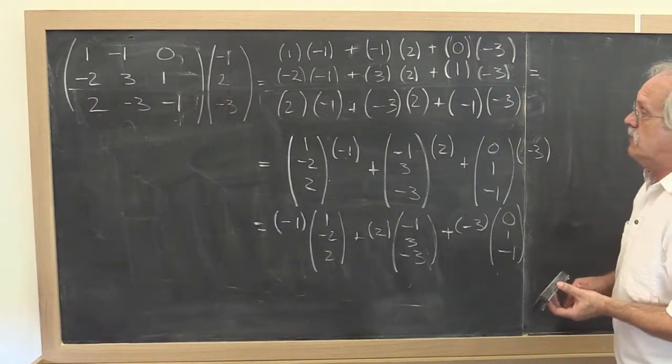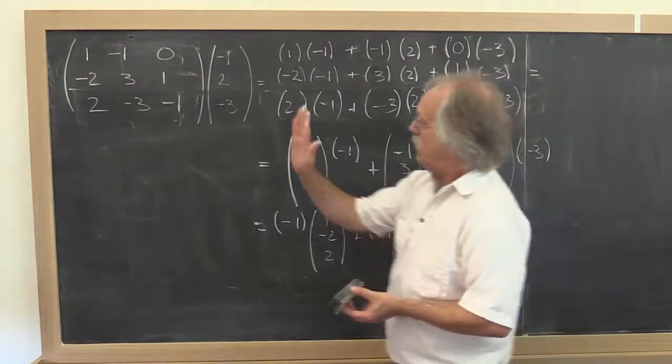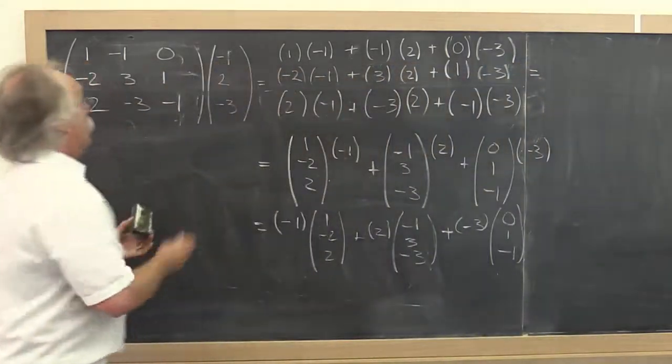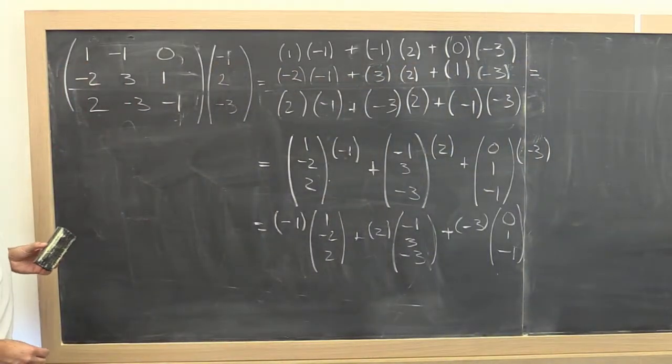So what does this mean? This means that we should be able to go through the matrix by columns. So as a matter of fact,